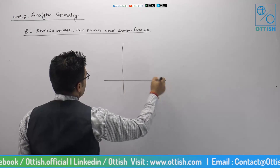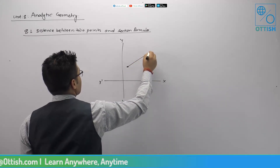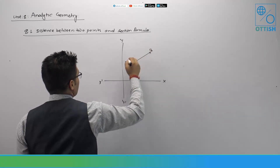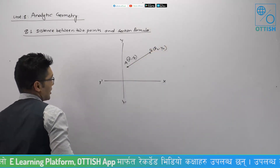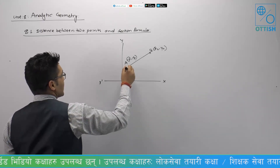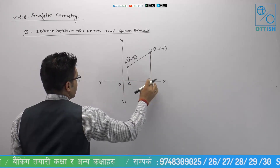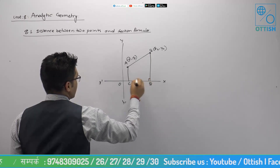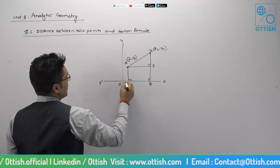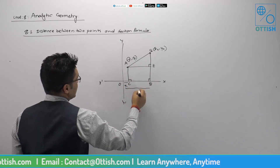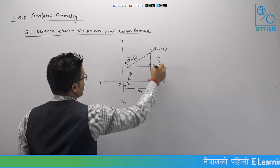On the x-axis and y-axis, this is the point A with coordinates x1, y1, and B with coordinates x2, y2. So, we can find out the distance. We can draw a perpendicular line — draw AC and BD perpendicular to the x-axis. Here, OC is x1 and OD is x2. Then CA is y1 and BD is y2.